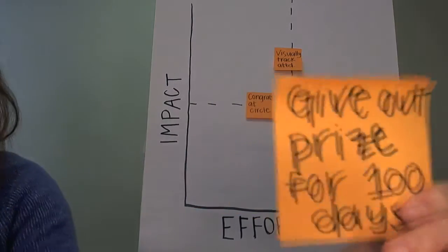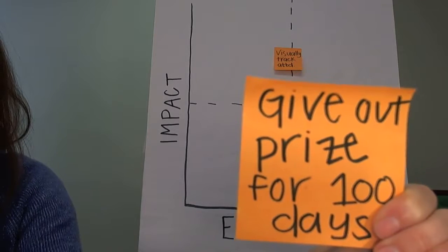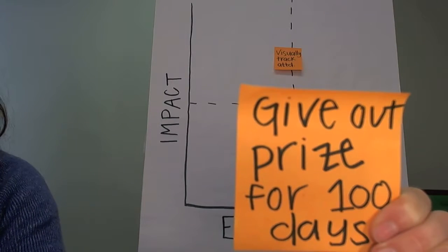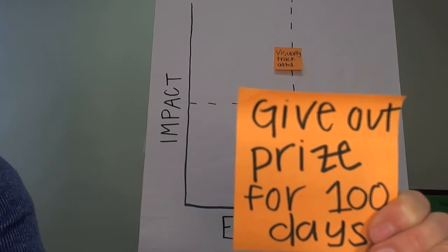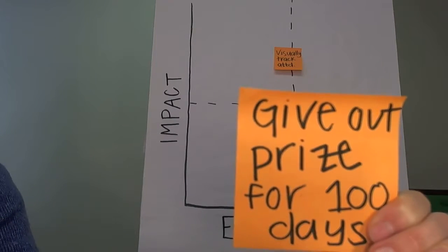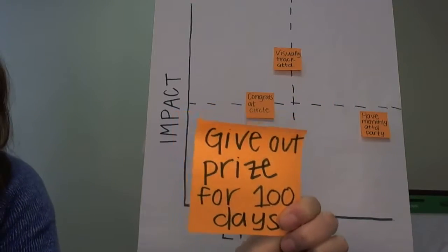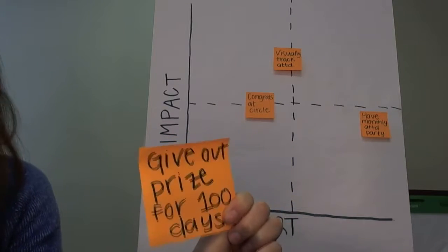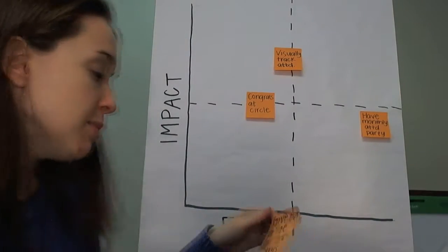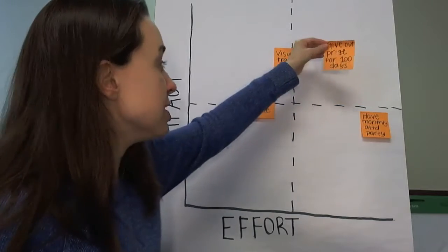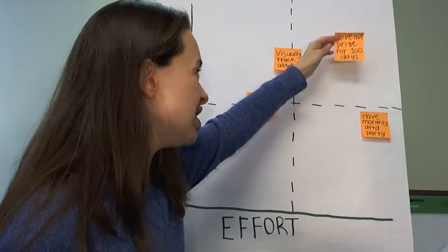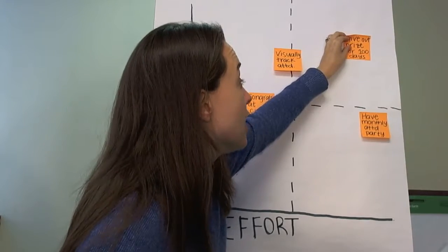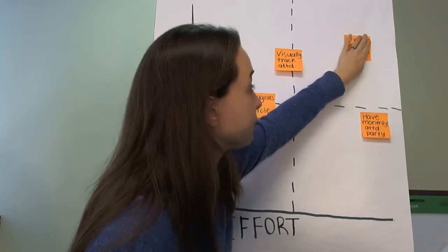Somebody suggests giving out a prize for attending a certain number of days. If you're using a sticky note, be specific — is the prize a t-shirt or a popsicle? That would have a different impact. For example, at a program where kids attended 100 days they got a t-shirt that says 'I've attended 100 days this year' and they loved wearing them. So the impact will be high because kids love t-shirts, and the effort will be high because it's a high cost and we'll have to track 100 days.